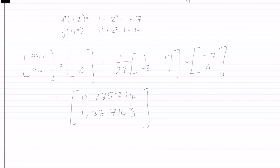And that is our x_i plus 1 value, y_i plus 1 value. So that is our first iteration.